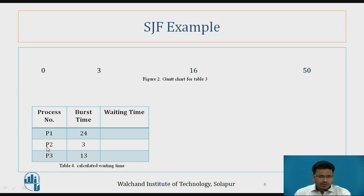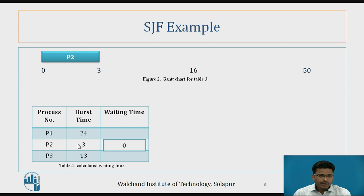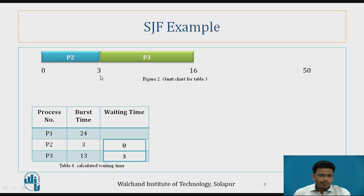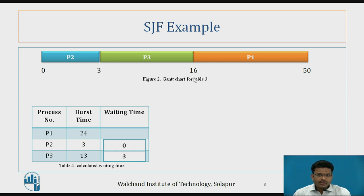We find the shortest burst time first. P2 is executed first, so P2's waiting time is 0. Next, we compare P1 and P3 — P3 has burst time 13, which is shorter than P1's 24, so P3 executes from 3 to 16 milliseconds. P3's waiting time is 3.